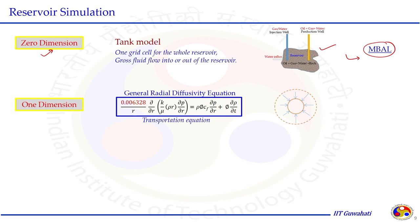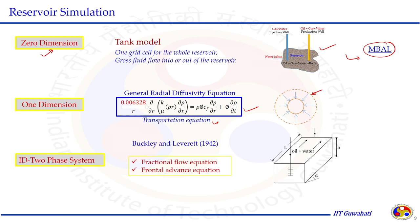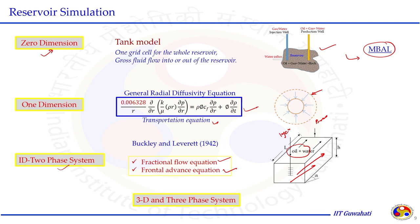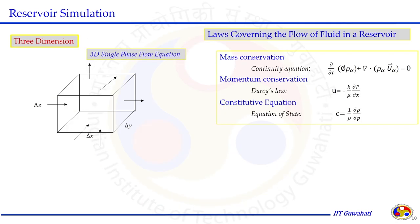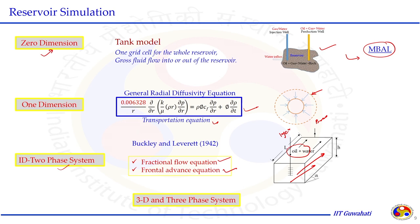Then there is the one-dimensional radial diffusivity equation, which includes the transportation equation for radial flow conditions. We also discussed the one-dimensional two-phase system given by Buckley-Leverett, which has two equations: the fractional flow equation and the frontal advance equation, where oil and water two-phase flow in one direction from injection well to production well. In actual reservoir simulation, the computer model is 3D and three-phase — oil, gas, and water — with fluid moving in all xyz or r-θ-z directions, making the problem very complex.